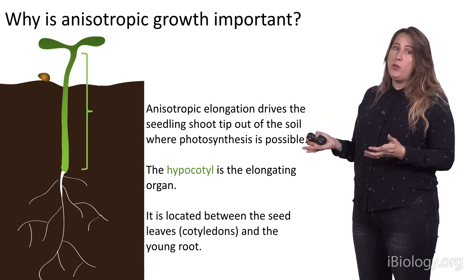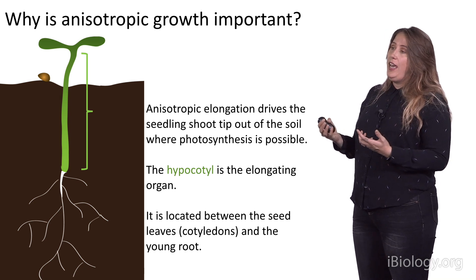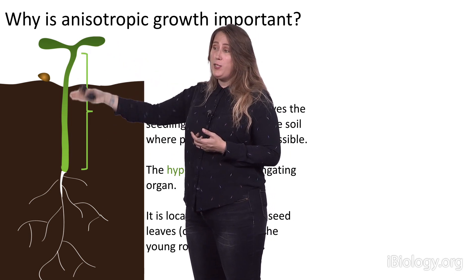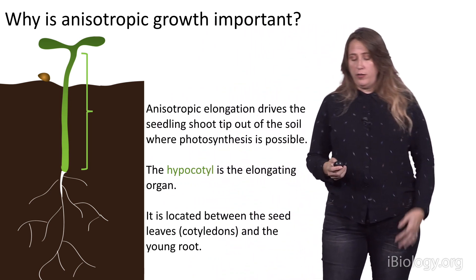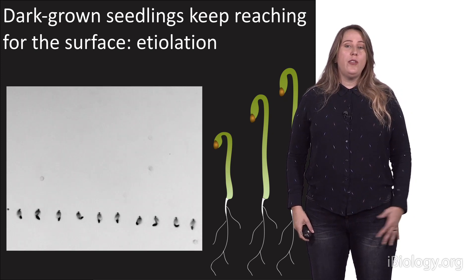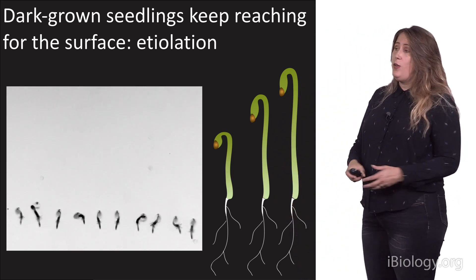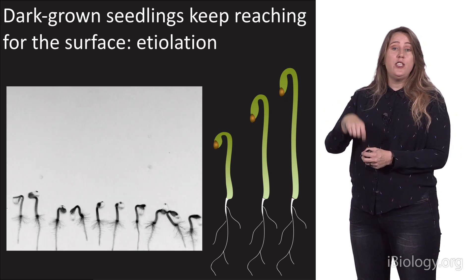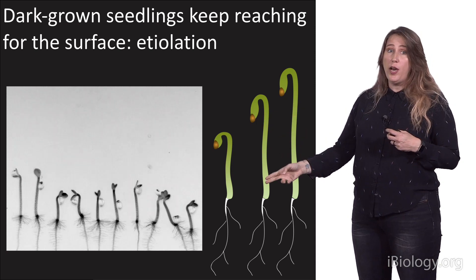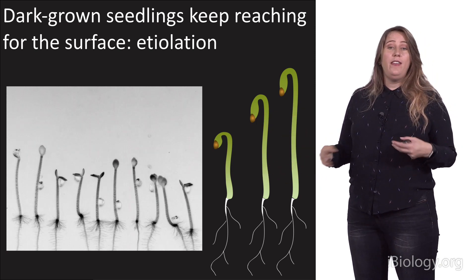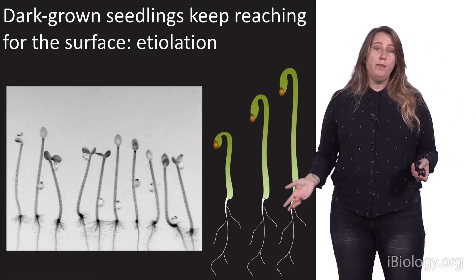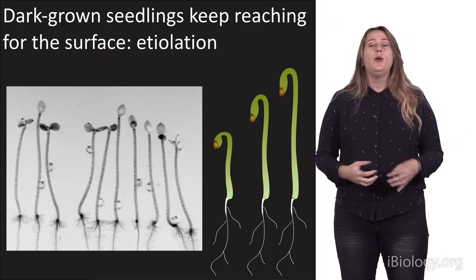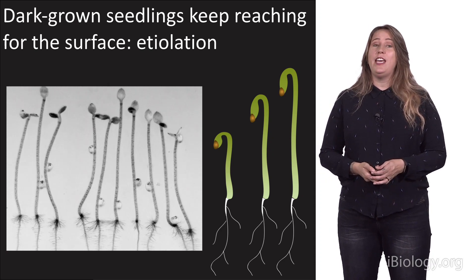The hypocotyl is a special organ in Arabidopsis and several other species, and it exists between the root system and the shoot tip. It expands almost entirely by cell elongation — there's very little division. If you grow these seedlings in the dark, they'll just keep expanding. As those seeds germinate, they pop out of their seed coats, the seedlings start to elongate, and that elongation is mostly due to elongation of the hypocotyl organ, reaching to try and get out of the soil. Growing in complete darkness, we can simulate this growth through soil, and you can see them getting very anisotropic.